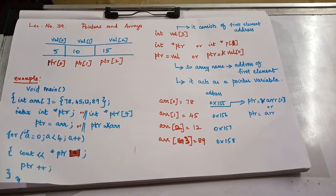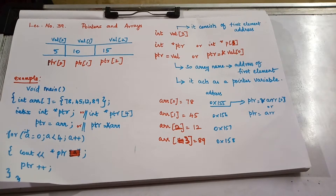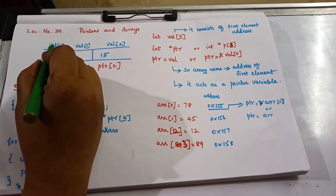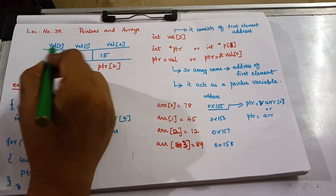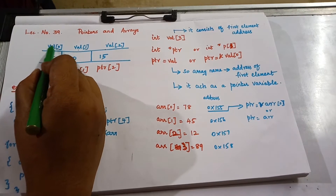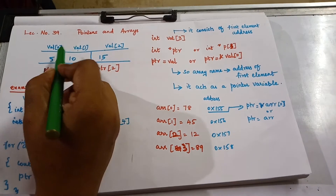In this video we are going to discuss about pointers and arrays. Arrays are a collection of data. If you are using only one variable, a single variable like 'int x' is enough, but if you are going to use a list of elements under one name, you have to go for arrays. Here is an example: the array name is 'val' and it consists of values 5, 10, and 15 at indices 0, 1, 2.